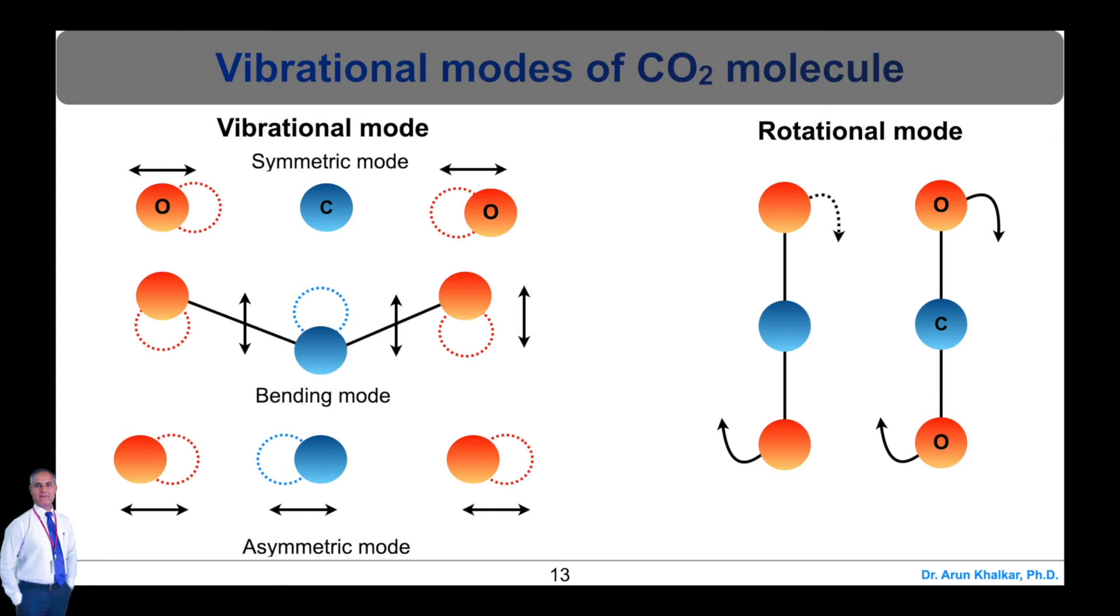The separation between vibrational-rotational states are much smaller on the energy scale compared to the separations between electron energy levels. The N2 molecule is also characterized by similar vibrational levels. So these two diagrams show vibrational mode as well as the rotational mode.